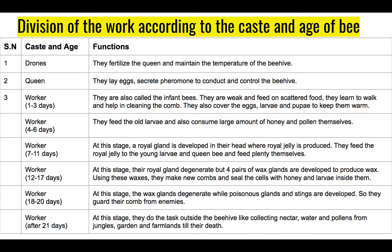Worker bees of four to six days are a little more grown up. They help feed older larvae and consume large amounts of honey and pollen themselves to grow. The major function during this stage is feeding older larvae.